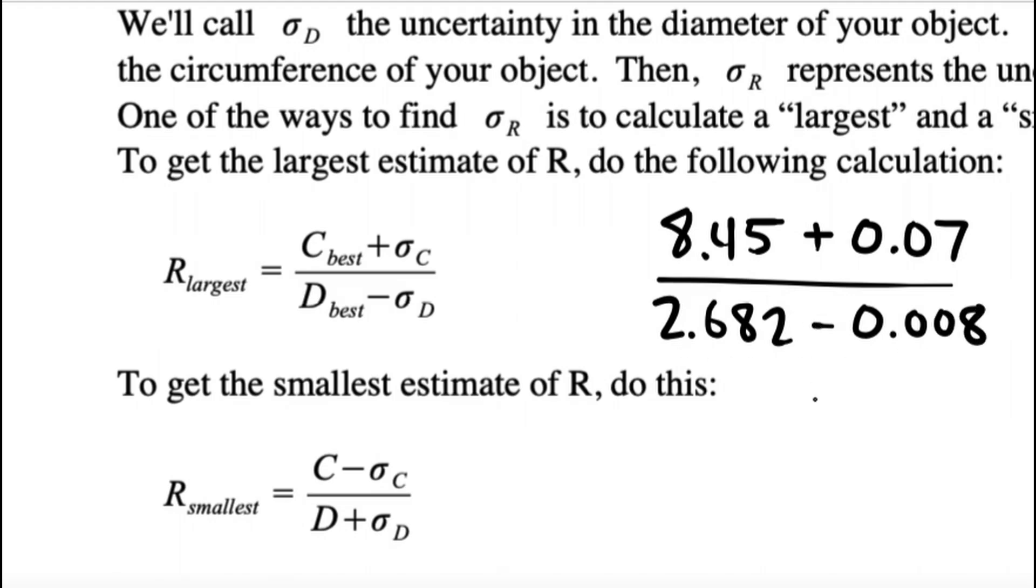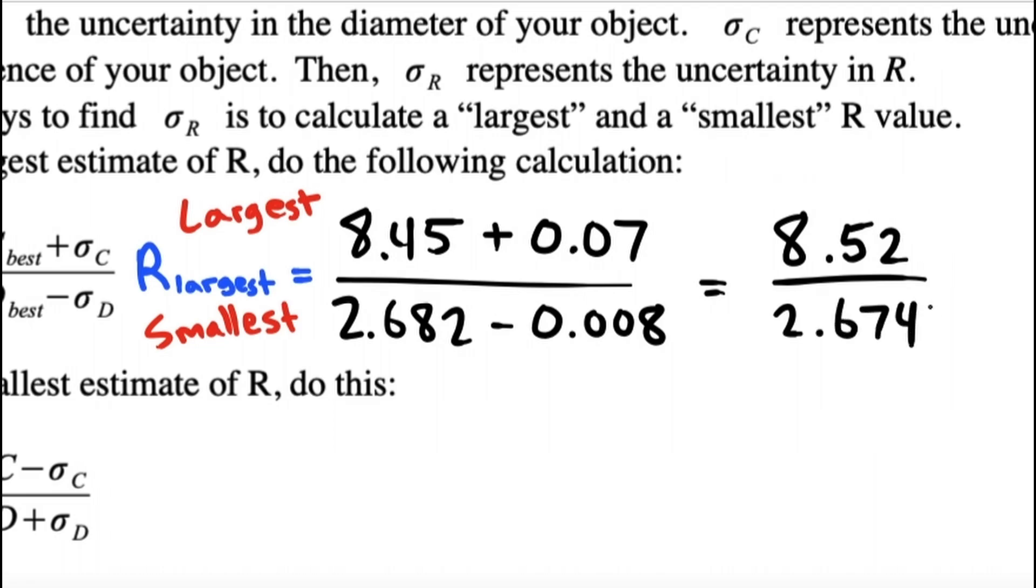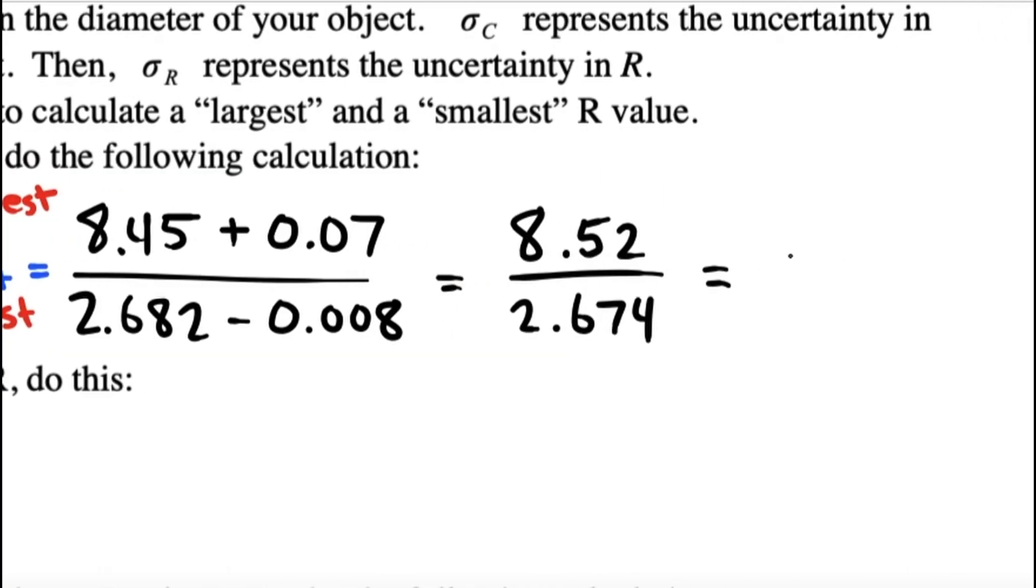The reason why this is done with a fraction is because you want the largest numerator and the smallest possible denominator, because that will give you the largest result of your calculation. I'm calling it R largest in the lab. R stands for result of the calculation. So it could be 8.52 divided by 2.674. Let's see what that ends up being. 3.186.